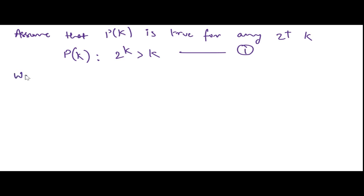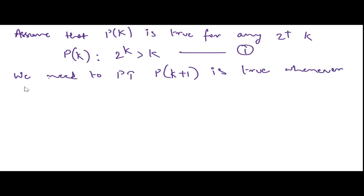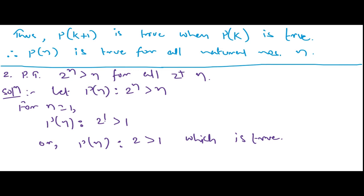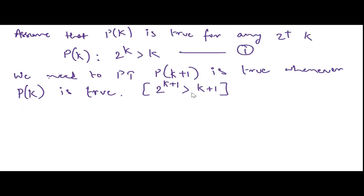Now we need to prove that P(k+1) is true when P(k) is true. We need to show 2^(k+1) > k+1. To derive this, multiply both sides of equation 1 by 2. So 2 × 2^k > 2k, which gives 2^(k+1) > 2k, and 2k can be written as k + k. So 2^(k+1) > k + k.